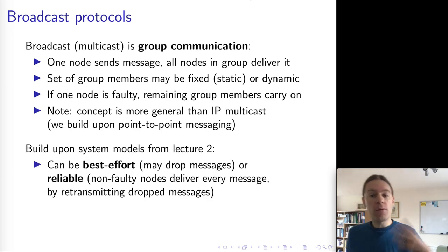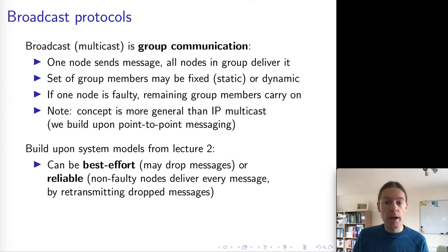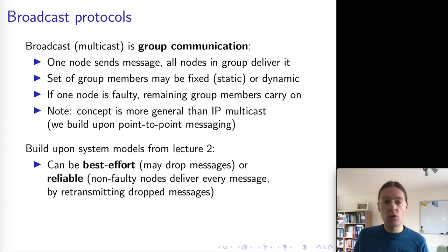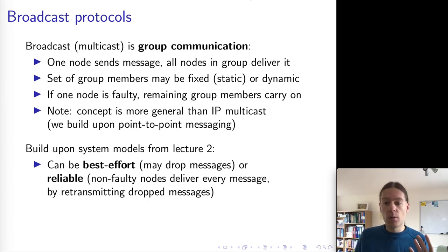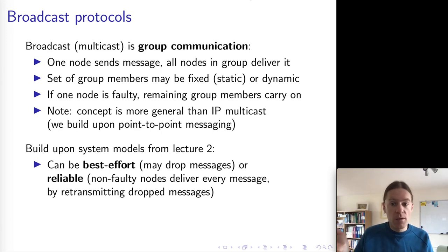Thinking back to the discussion of system models in lecture two, we have the distinction between fair loss links and reliable links. Most network links are fair loss, but you can make them reliable by retransmitting messages. Exactly the same distinction happens in broadcast protocols, except here a network that might lose messages we call best effort broadcast. Best effort broadcast just means one node tries to send a message to all the other nodes, but it may or may not arrive.